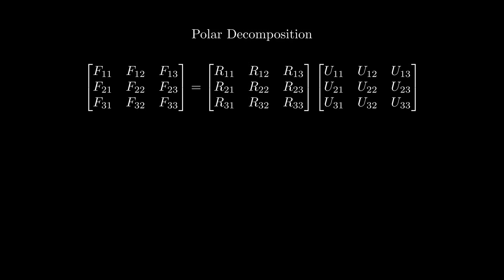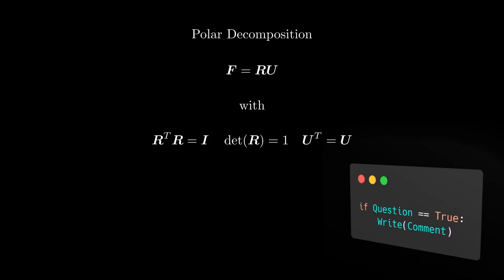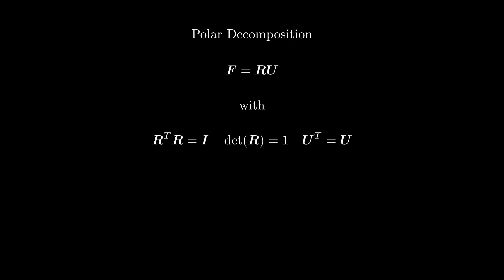Let's continue with another matrix decomposition: the polar decomposition. I believe this one is even more important when describing deformation, because the polar decomposition reveals that the deformation gradient is actually not a pure measure of deformation. The deformation gradient can be decomposed into a matrix R and a matrix U, where R is a proper orthogonal rotation matrix with R transpose R equal to the identity, and U is a symmetric matrix. We will not discuss the mathematics of how R and U are computed in detail. All you need to know is that for a given matrix F, there is only one possibility to compute R and U such that the given properties are fulfilled.